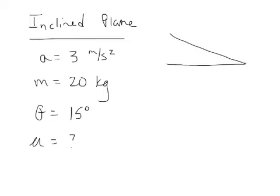Let's draw an object on the inclined plane. What's pulling that object down the inclined plane? Gravity — it's the only natural force here. Imagine you had an incline set up and put an object on it; it starts to slide on its own. There's no force being applied, though we could add a force — say 20 newtons down the plane, drawn as a vector fp — but for this example there's nothing. Gravity always acts straight down.